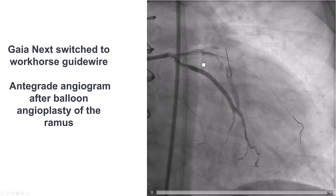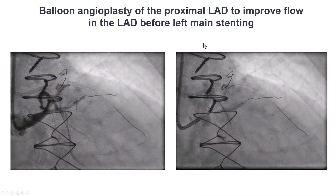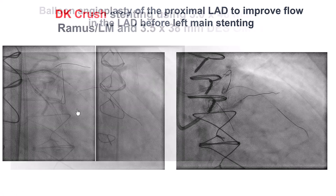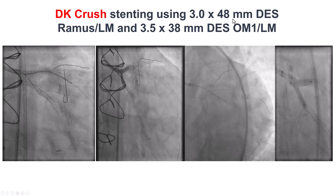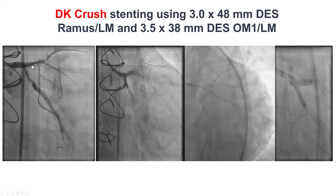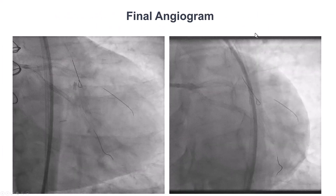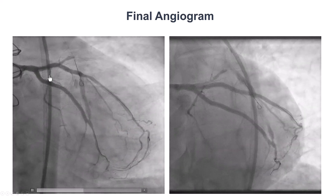We switched the guidewire into the RAMUS for a workhorse wire, ballooned both vessels, and had flow going in both directions. Given the complex bifurcation, we decided to use the DK-crush technique. We confirmed good balloon expansion in both branches and then performed the DK-crush, using a 3.0 by 48 mm stent into the obtuse marginal, then the RAMUS, then a 3.5 by 38 mm into the obtuse marginal branch. This provided a nice result with excellent TIMI flow into both the OM and RAMUS branch.